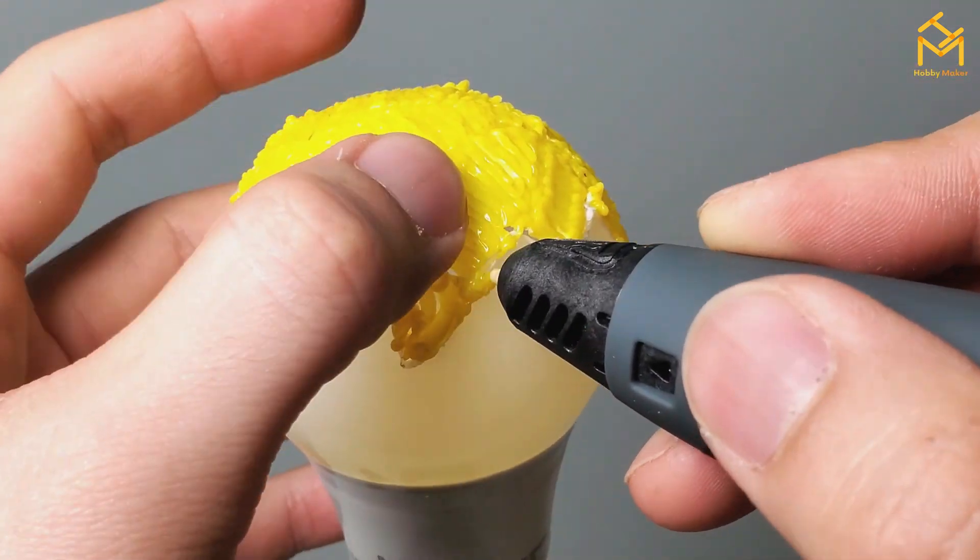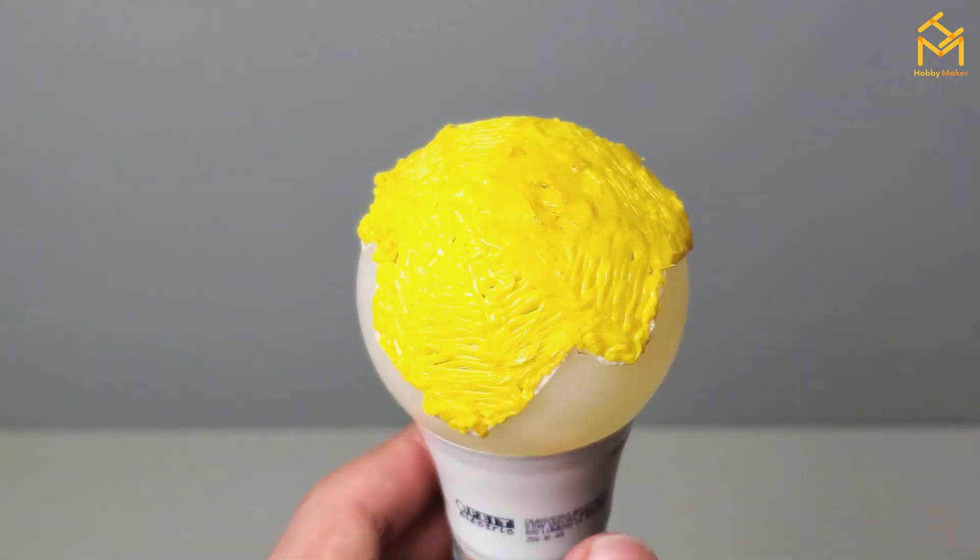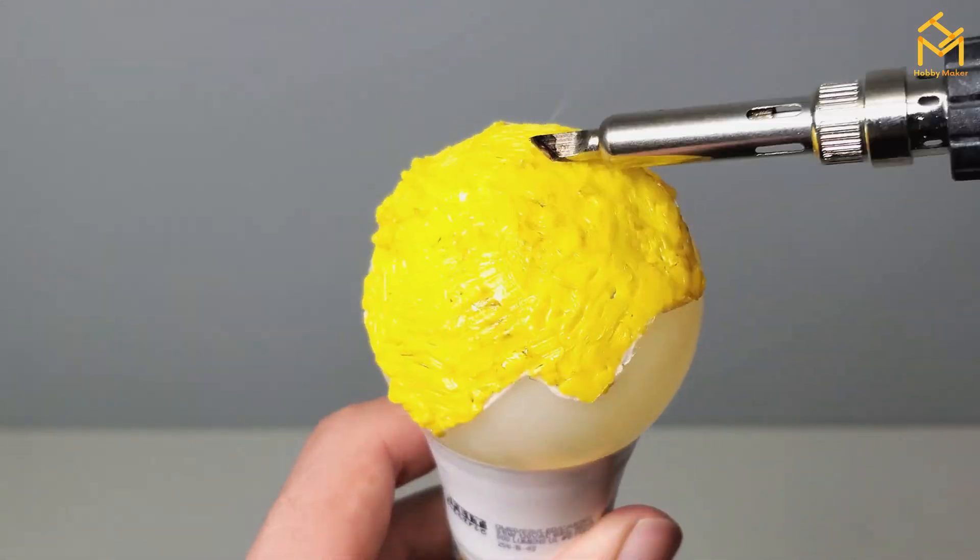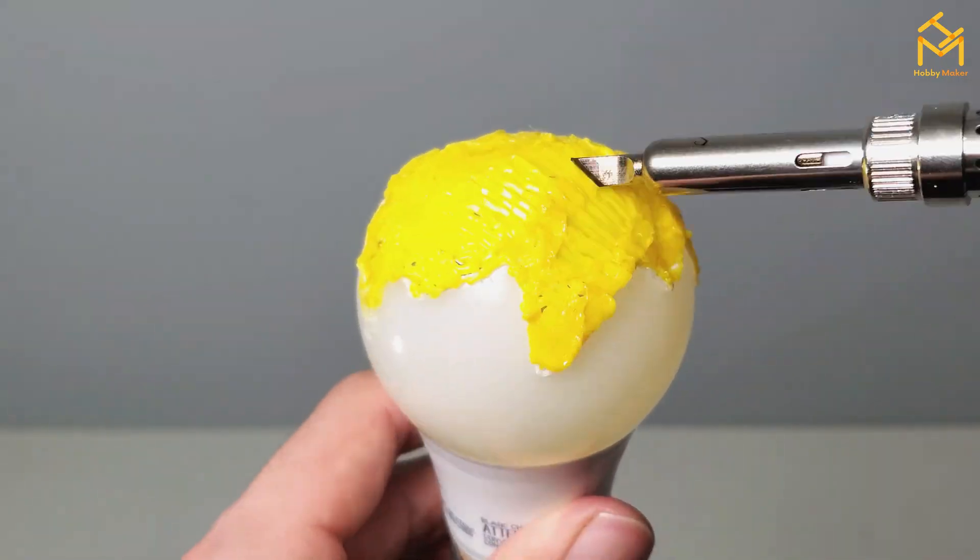Then I used this soldering tool to smooth it out like this because it's too rough. And don't forget, it melts at a certain temperature. So don't set it too hot.